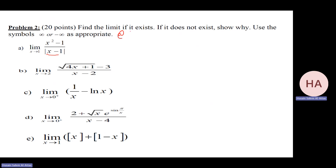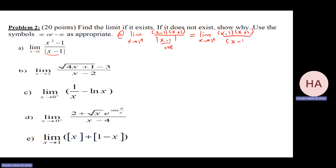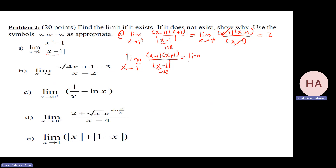Part a with absolute value: limit as x goes to one from the right gives x minus one over x plus one divided by x minus one. Since x minus one is positive from the right, the absolute value equals x minus one, which cancels. Substituting gives two. However, from the left, x minus one is negative, so the absolute value equals minus x minus one. After cancellation the result is minus two. Since the one-sided limits differ, the limit does not exist.